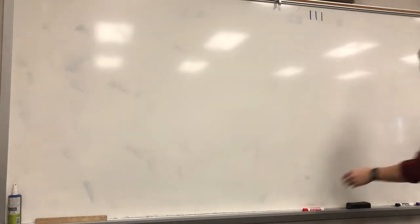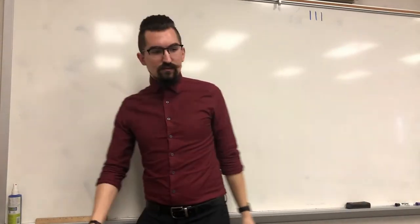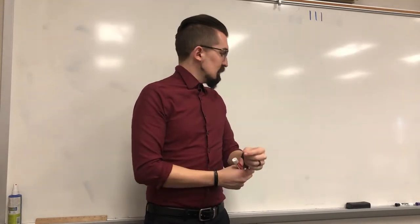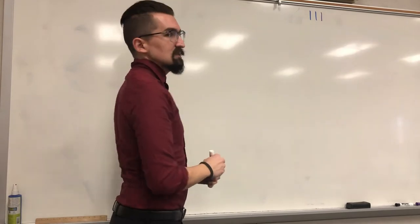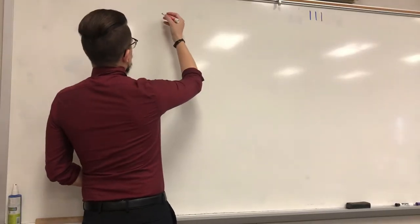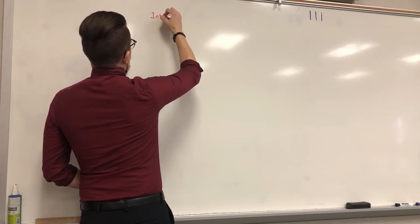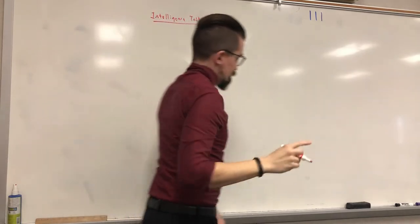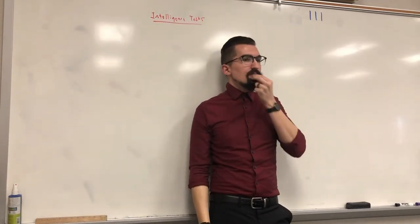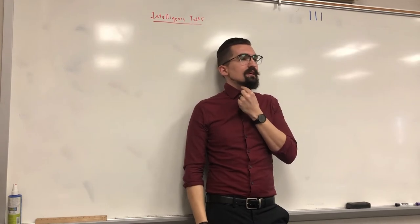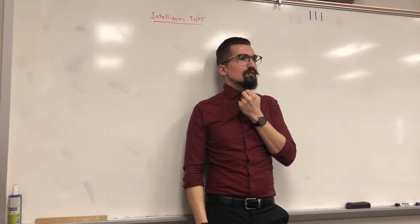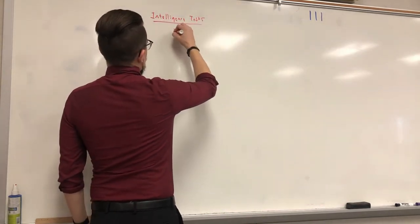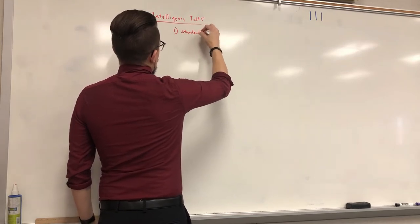Now we're done with the intelligence controversy and the various other theories for multiple intelligences and why they're not valid, but you should know them for the AP test if they show up. Page 19, the last one for unit 5 is intelligence tests. There are three factors you have to have to know if your test is a good test — if it's a valid, predictable, reliable test.